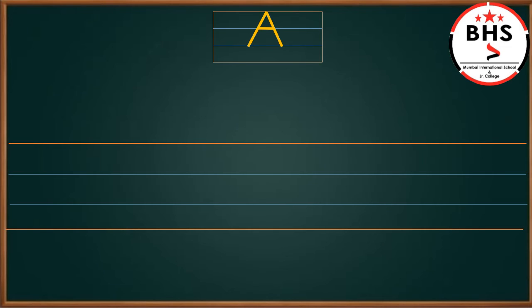Children, now I will teach you how to make A. We will write A from red line to blue line. Let me show you how. Make a slanting line from red line to blue line.